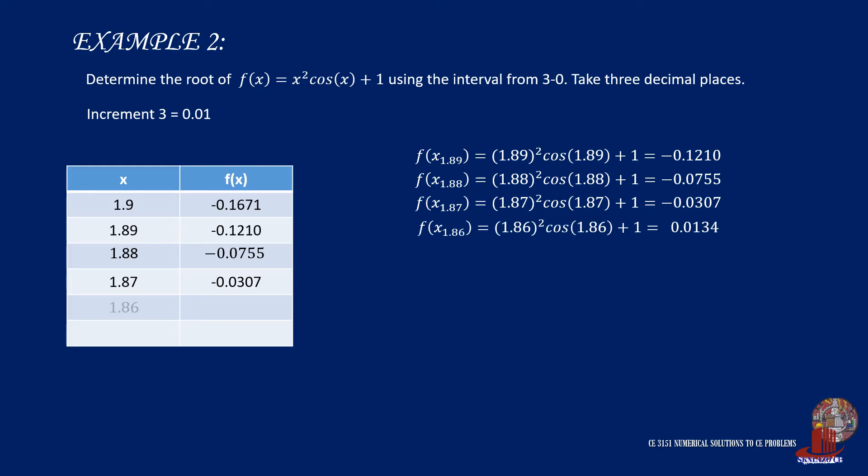Then taking another interval, place 1.86 into the equation, and f(x) turns into a positive 0.0134. We can stop at this point and focus on the third decimal place as required, taken between 1.87 and 1.86.